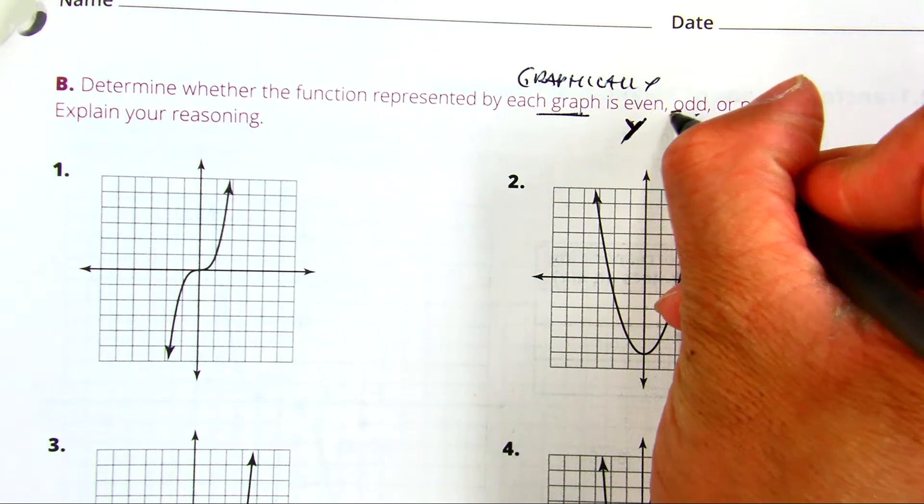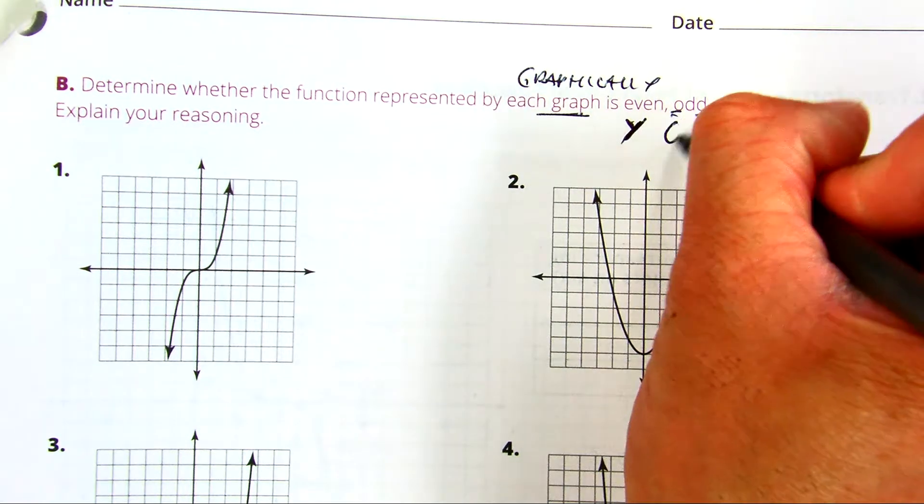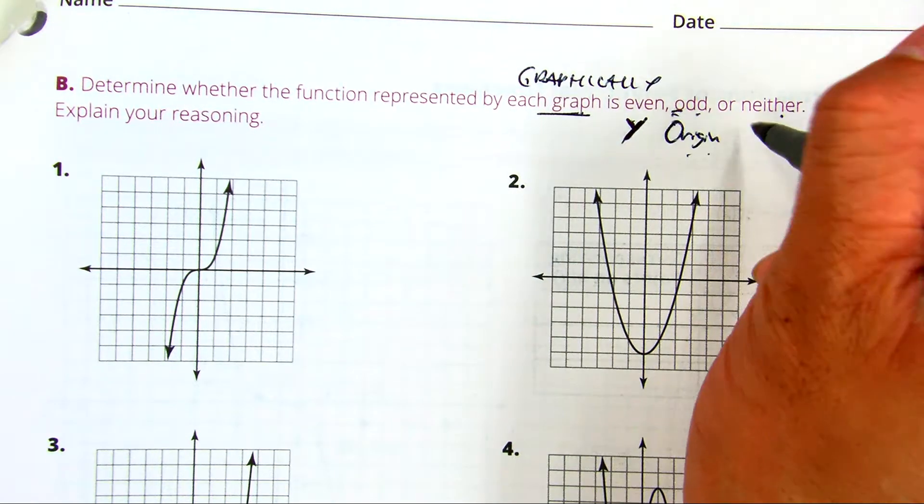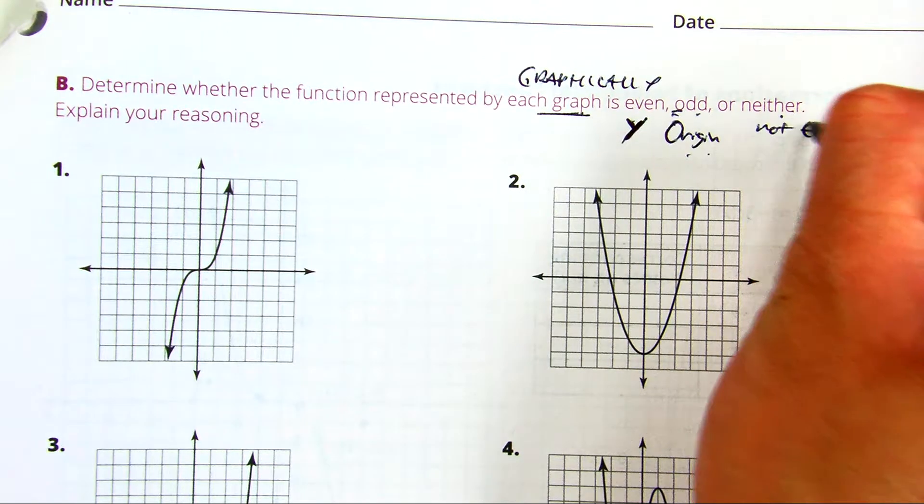Odd starts with an O for the origin. It's going to be rotated around the origin, and neither means not even, not odd.